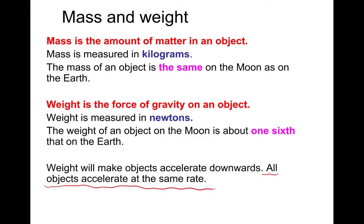Weight makes objects accelerate downwards, and all objects accelerate at the same rate. That's a peculiar one to get your head around because a lot of people think heavier objects will fall faster. If you've got a 2-kilogram mass and a 10-kilogram mass that are the same shape and drop them, they would hit the floor at the same time.